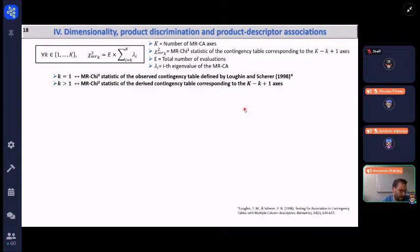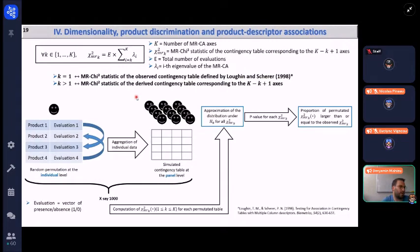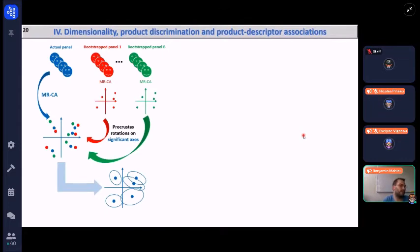Unfortunately, the distribution under the null hypothesis of this statistic is very complicated asymptotically. So I developed a Monte Carlo procedure to establish the distribution under the null hypothesis. It is based on permutations. Each evaluation at the individual level, which means for each subject, are permuted without permuting the labels. The data are then aggregated at the panel level. The procedure repeated a large number of times. And for each of these simulated contingency tables, the chi-square statistics at rank K are computed, which enable approximating the distribution under H0. And then a p-value is computed as the proportion of permutation statistics larger than the observed one. Then this information is used in all subsequent analysis.